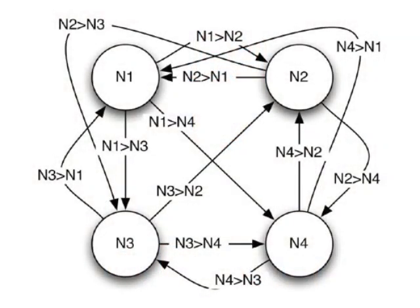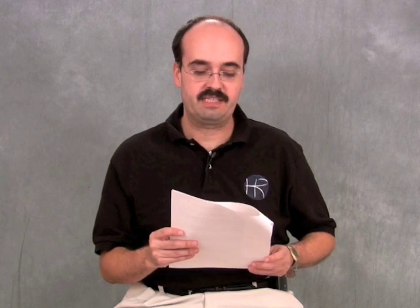Class 3 will continue with a Hopfield neural network. You can see a Hopfield neural network here — this is one of the most simple forms of neural network. This chapter will also introduce the Delta rule and Hebb's rule, which are two learning methods for neural networks.